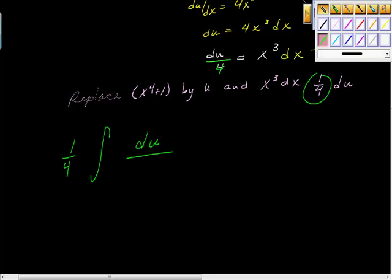Over, and then at the same time, we had x to the fourth plus one in the denominator, but that's what we use our u substitution to let that be u. And we have this now, don't we?